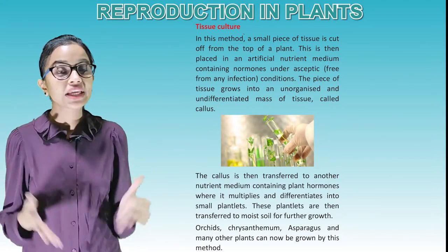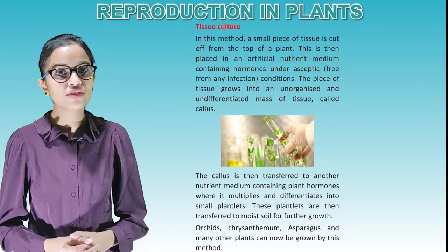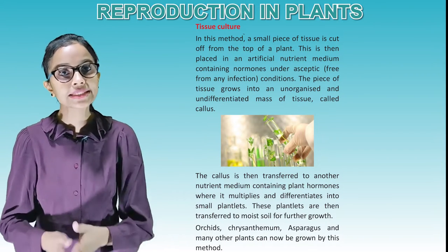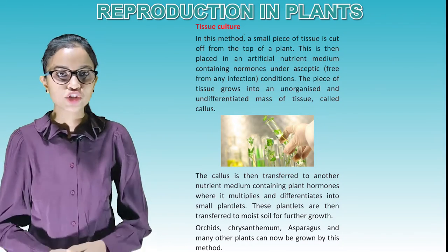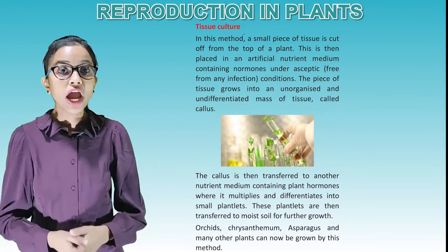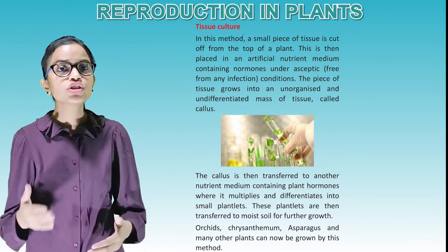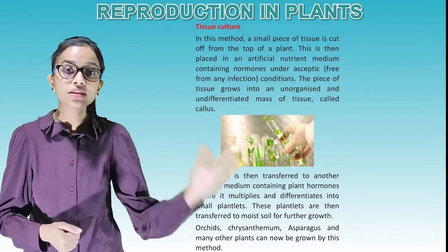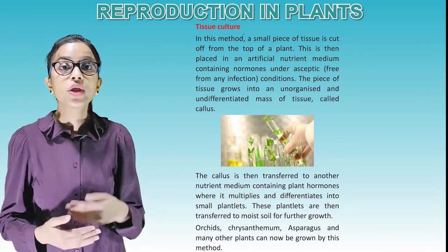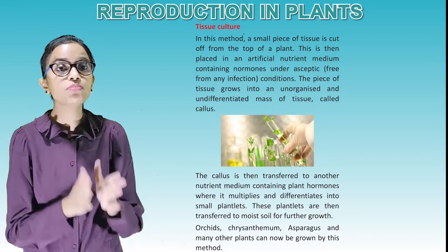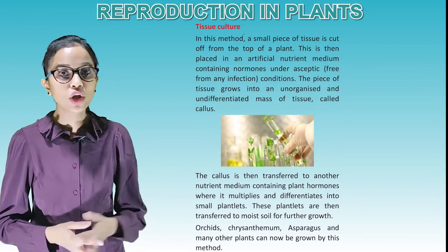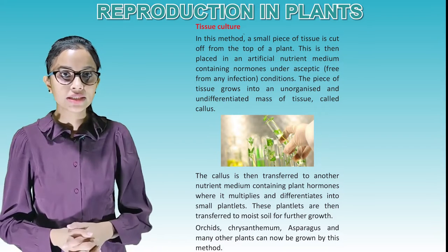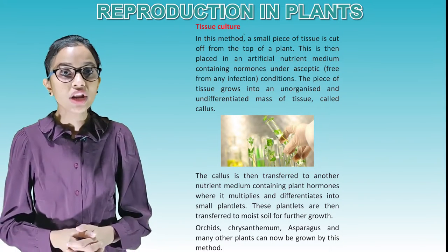Tissue culture: In this method, a small piece of tissue is cut off from the top of a plant and placed in an artificial nutrient medium containing hormones under aseptic — that is, infection-free — conditions. The piece of tissue grows into an unorganized, undifferentiated mass of tissue called callus. The callus is then transferred to another nutrient medium containing plant hormones, where it multiplies and differentiates into small plantlets. These plantlets are then transferred to moist soil for further growth. Orchids, chrysanthemum, asparagus and many other plants can now be grown by this method.